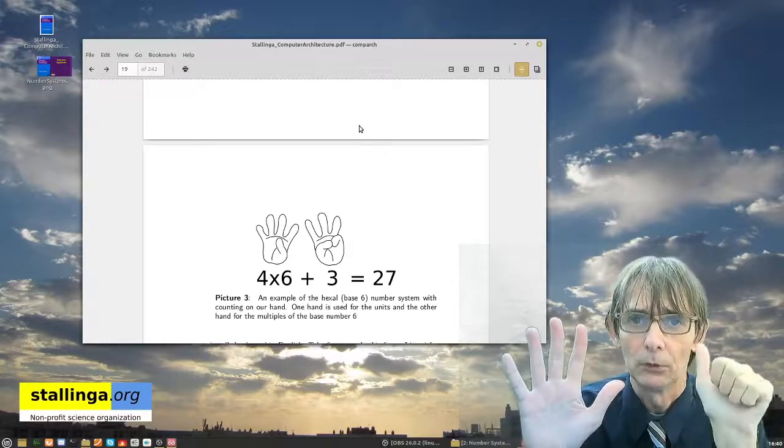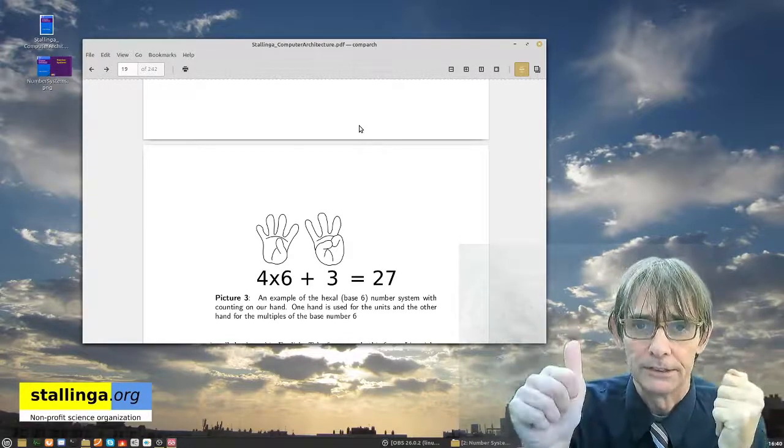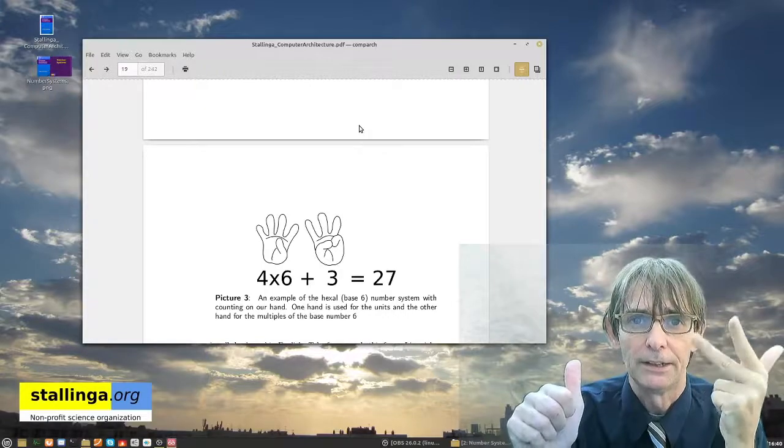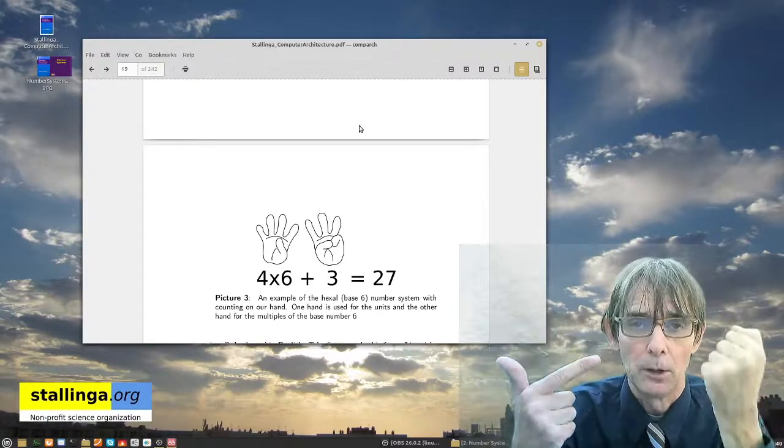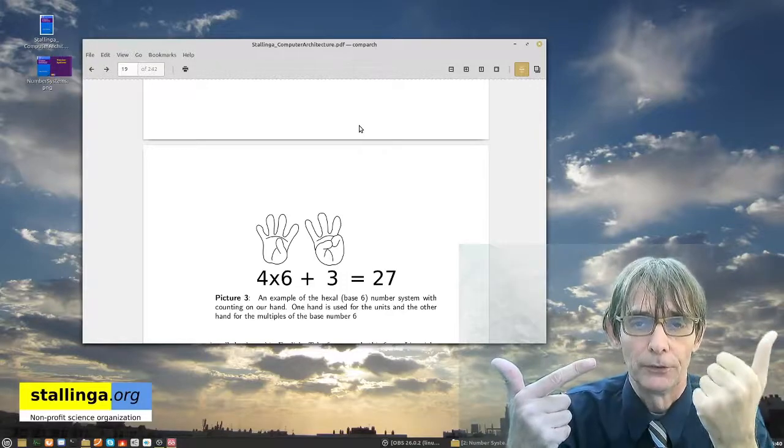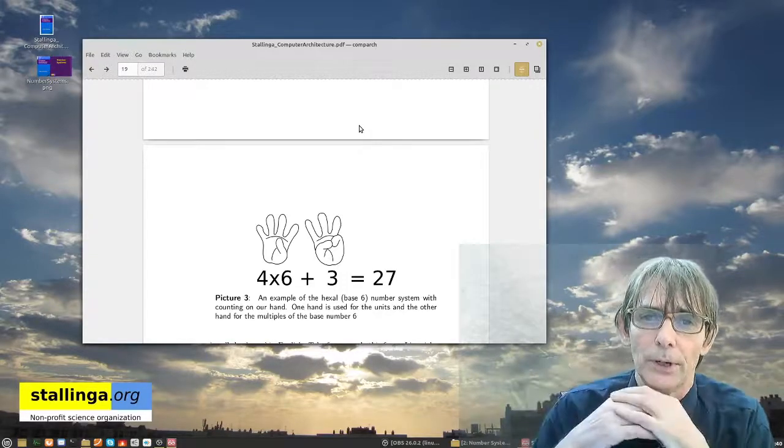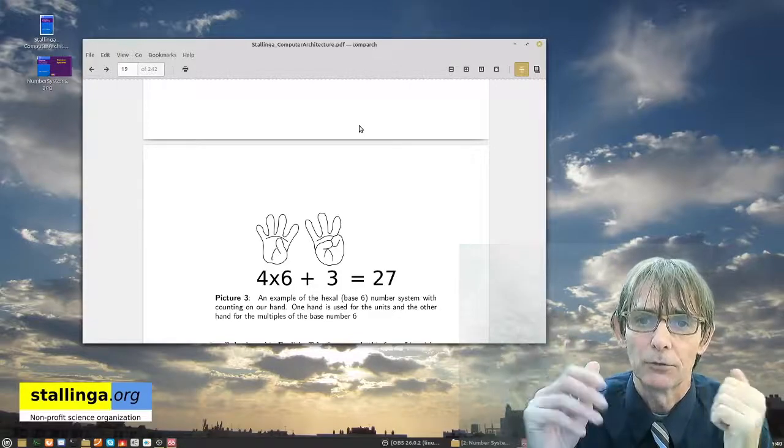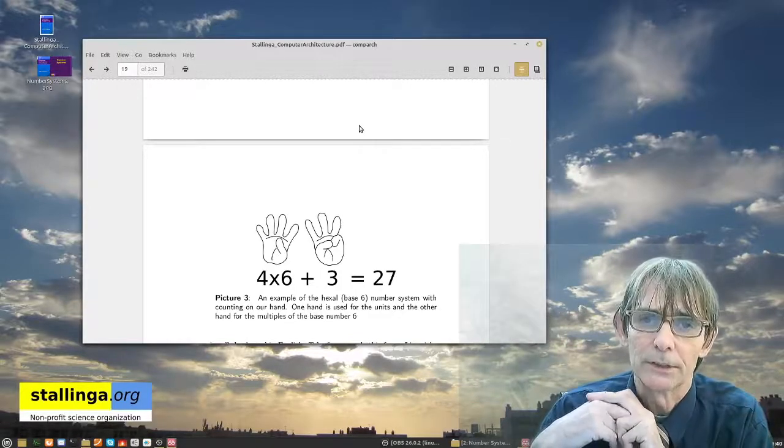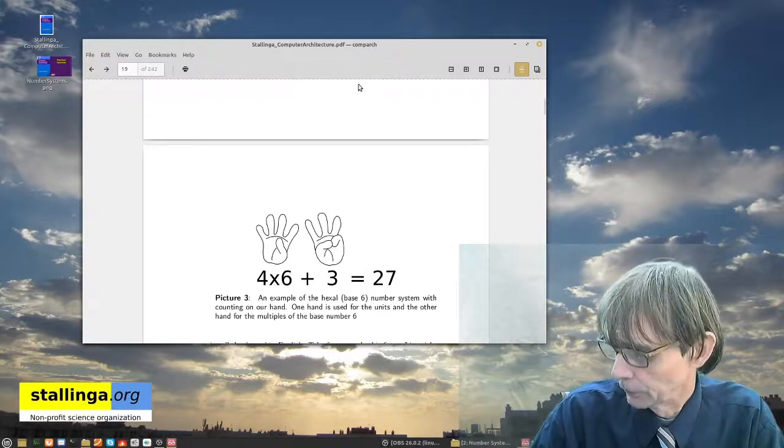So let me do the counting. One, two, three, four, five, six, seven, eight, nine, ten, eleven, twelve, which is two times the base plus zero, thirteen, fourteen, and so on. So you get the idea. Because we have five fingers on each hand it is therefore easy to use the system that is based on six. So this is how it goes.